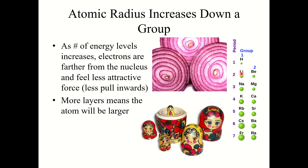For example, going from hydrogen to lithium, sodium, potassium, rubidium, cesium, francium — going down that first column — atomic radius increases. The same is true in the second column, going from beryllium down to radium.